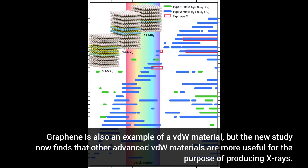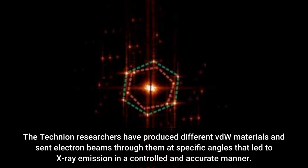The Technion researchers have produced different VDW materials and sent electron beams through them at specific angles that led to X-ray emission in a controlled and accurate manner.